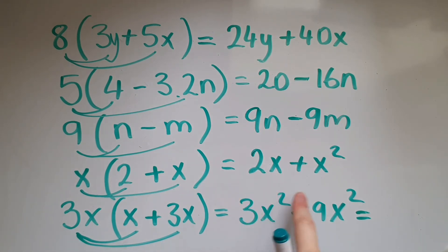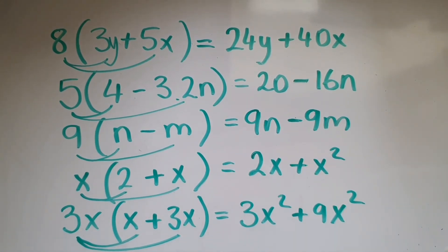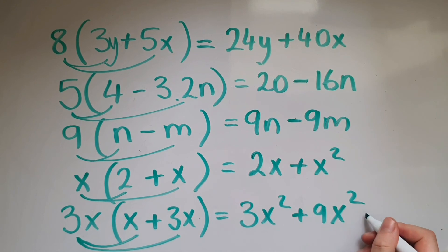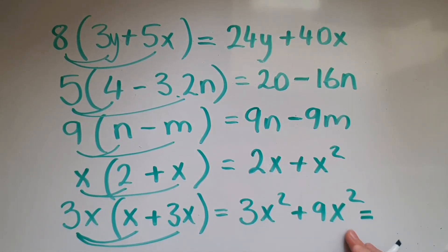We can simplify this further because they are the same, so we've got 12x squared in total. We can collect the like terms because they both have x squared, so 3x squared and 9x squared gives us 12x squared.